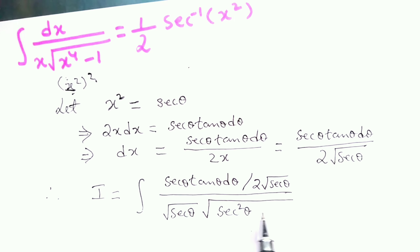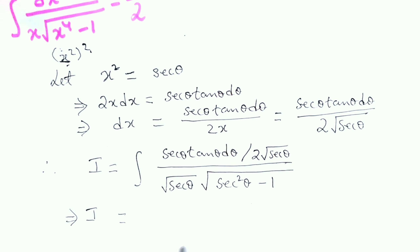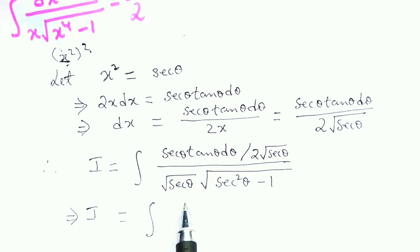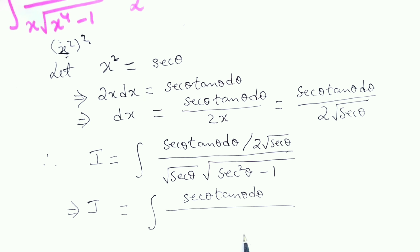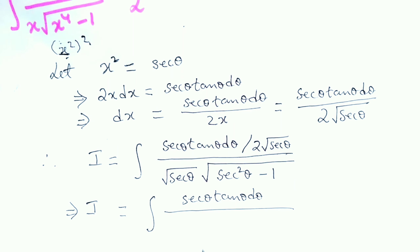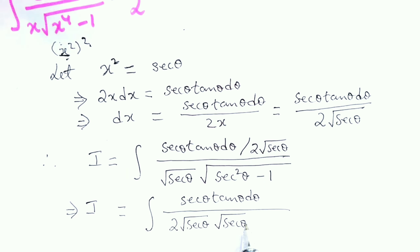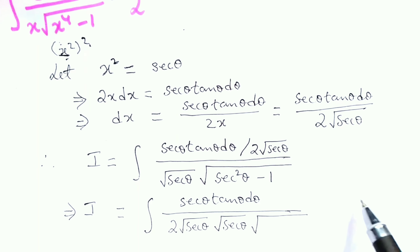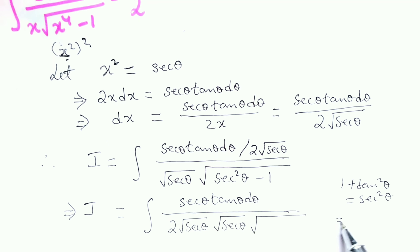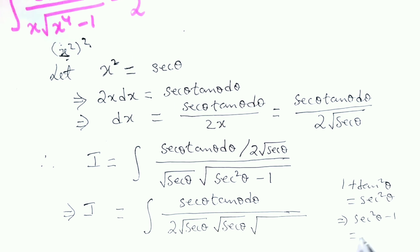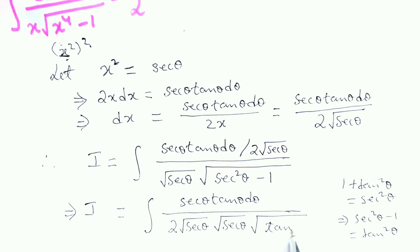We have sec²θ minus 1. So I is equal to the integration of sec θ tan θ dθ divided by √(sec θ) times √(sec θ). We know that 1 plus tan²θ equals sec²θ, so sec²θ minus 1 equals tan²θ. In place of sec²θ minus 1, we have tan²θ.